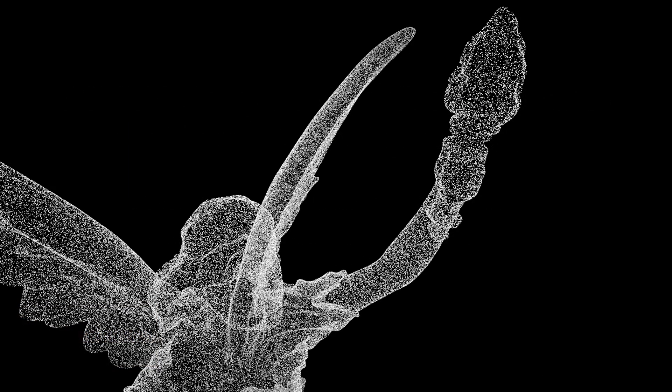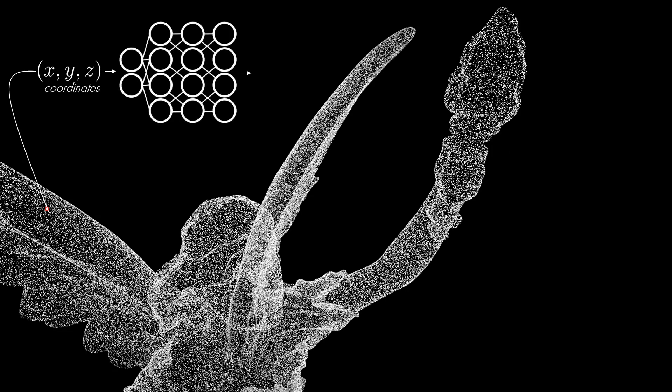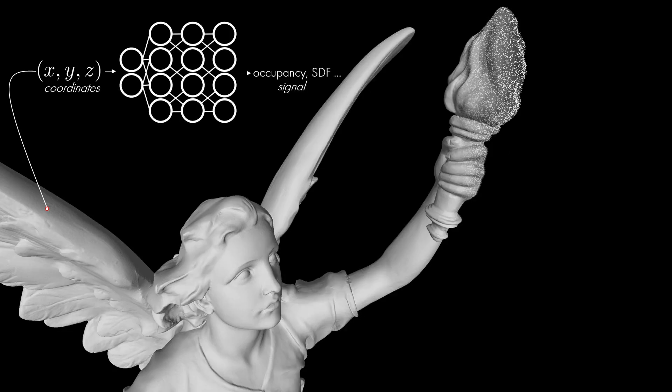Neural implicit representations, or coordinate-based networks, have emerged as a new paradigm to represent signals. A coordinate network takes low-dimensional coordinates as inputs, such as a position in a volume, and outputs a low-dimensional signal, such as the occupancy or the signed distance function at that position.